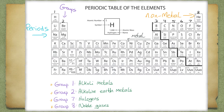Periods go horizontal, whereas groups are vertical. Each element within a group contains similar properties. This is because they each contain the same number of electrons in their outer orbit. For instance, all elements in Group 1 contain one electron in its outer orbit, and all elements in Group 2 contain two electrons in their outer orbit. The only difference between elements within groups is the number of orbits.